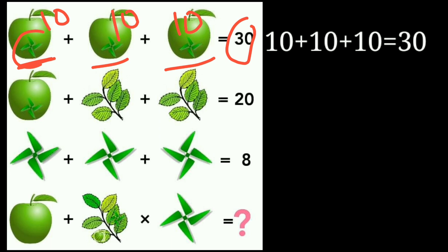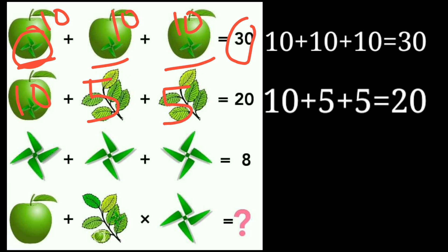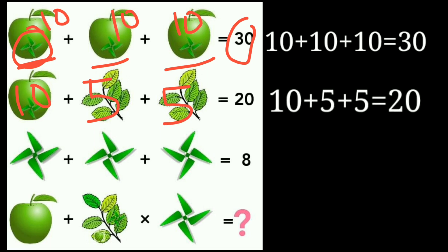Similarly, look at the second equation: apple-and-leaf-fan has a value of 10, and here are five leaves, so the value of each leaf is 5. This one is also 5. So 10 plus 5 plus 5 equals 20.